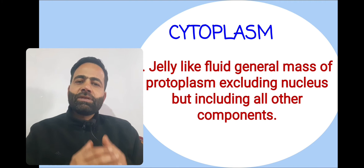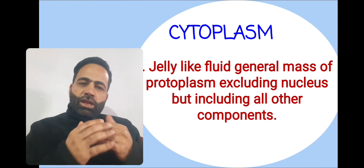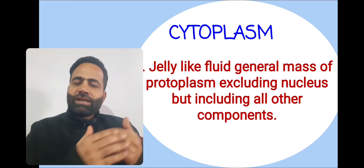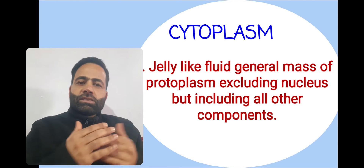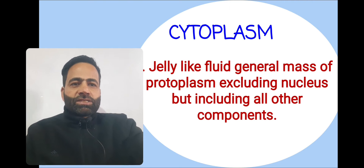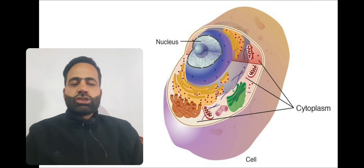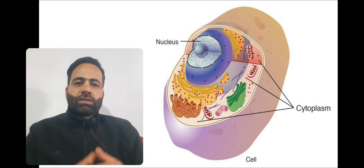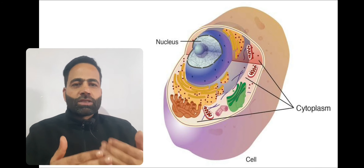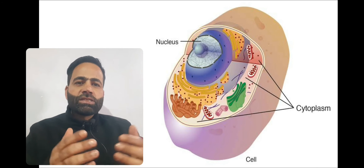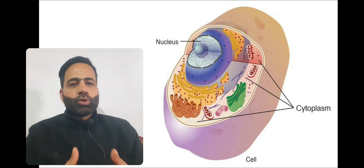So, cytoplasm is the jelly-like fluid general mass of the protoplasm, excluding the nucleus but including all other components. As you can see in the picture, without the nucleus, all other components — whether cell organelles, the fluid part, or the cell inclusions — together constitute the cytoplasm.